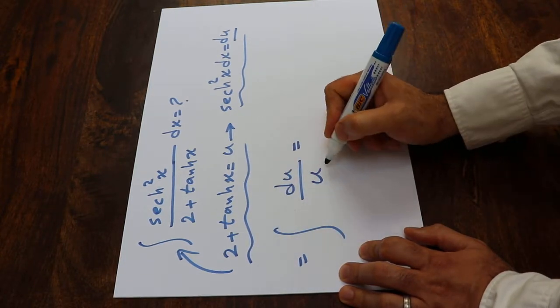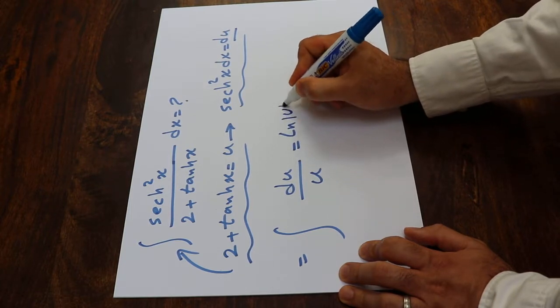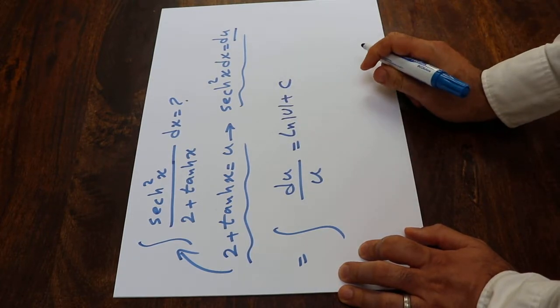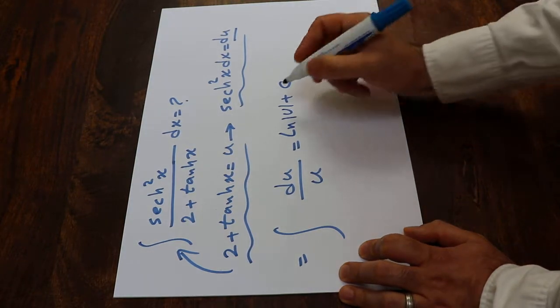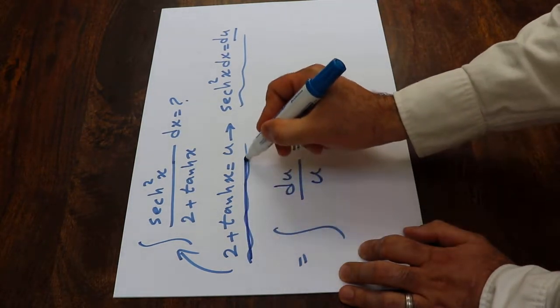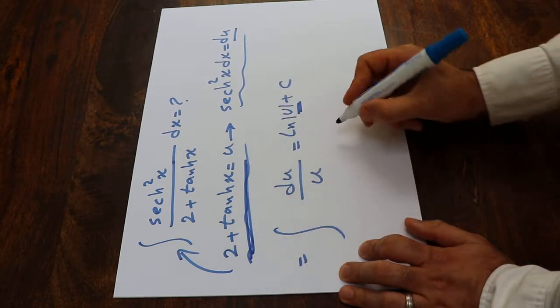The integral of du over u, we know that is equal to ln u plus c, which is the constant of the integral. So all you need to do here is substitute this parameter u with the definition of u, which is 2 plus hyperbolic tangent x.